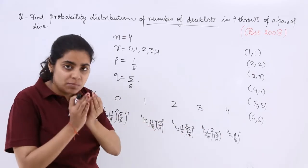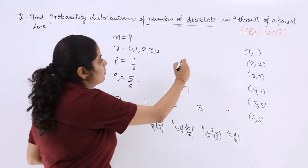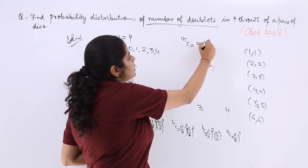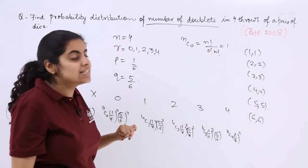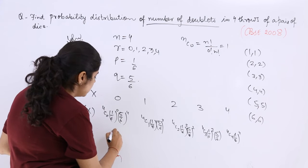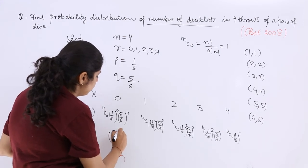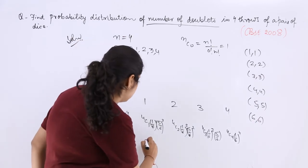Now this is not the final answer, you have to simplify it as a whole. See, 4C0 is nothing but nC0, which is nothing but 1. Even nC0, nCn both lead to 1. So this is 1. So this becomes 5 by 6 whole raised to the power 4.